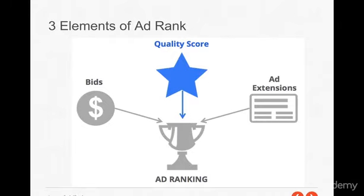Lastly is ad extensions. There's going to be a whole lesson just about ad extensions, but in the previous lesson I showed you how you can enable calls from ads on mobile — that's an ad extension. You can provide more information in what's called site links — that's an ad extension. You can have mobile downloads from your ad — that's an ad extension. There's a wide array of extensions that provide more context, more opportunities for conversions, and Google gives you a higher ad rank if you use them.